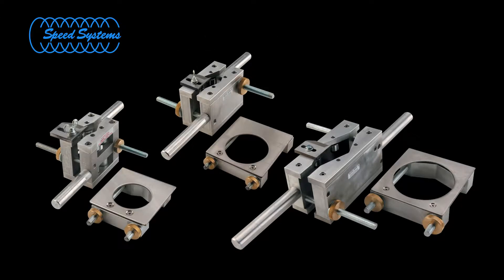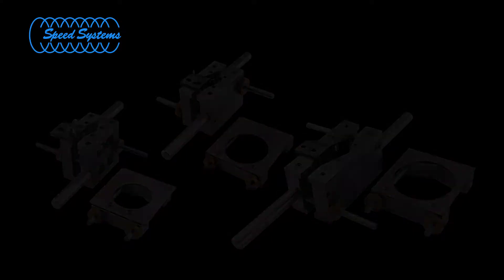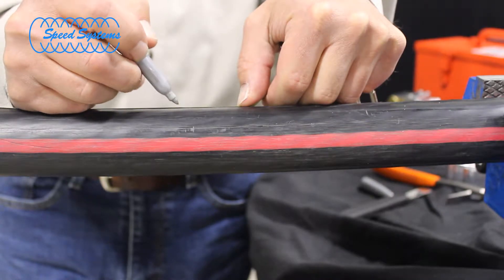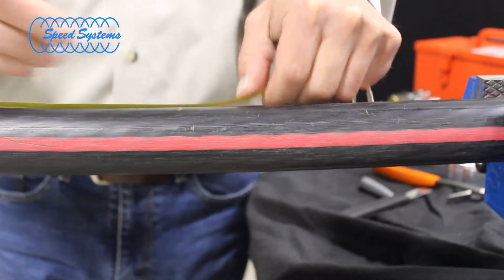For smaller cables, refer to the 1542 series tools. Measure and mark the strip back length on the outer jacket. Follow the instructions provided by the component supplier to determine the proper strip back length.